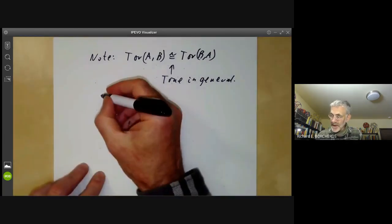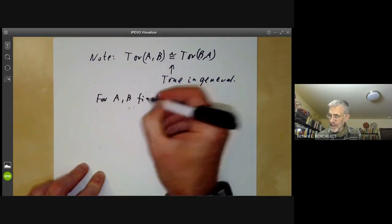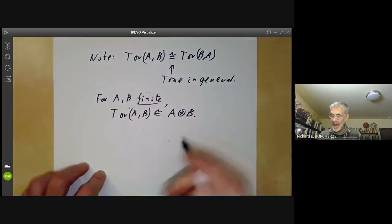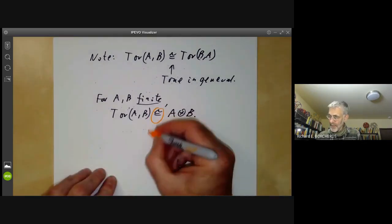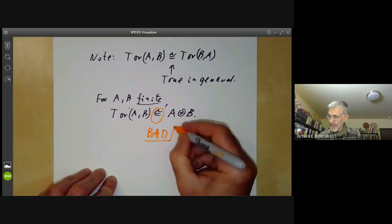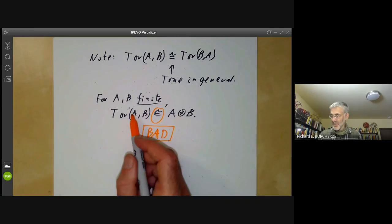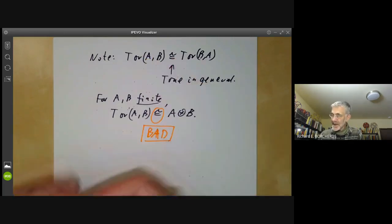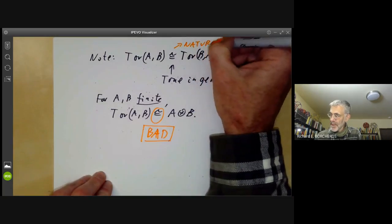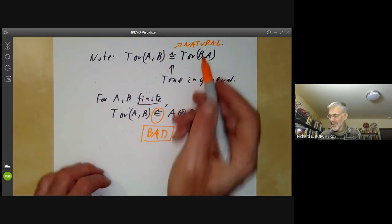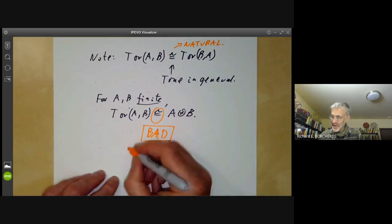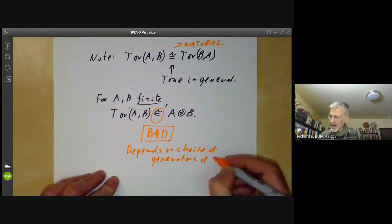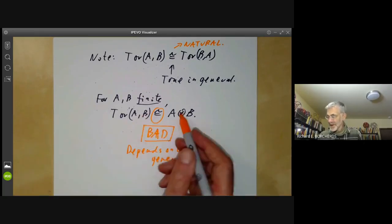Note that this symmetry isn't obvious at all, because although A⊗B ≅ B⊗A, we've defined Tor asymmetrically: we take a free resolution of A and tensor with B, versus a free resolution of B and tensor with A. So it's actually quite remarkable we get the same answer either way. We can also note that for A and B finite, Tor(A,B) happens to be isomorphic to A⊗B. However, this is a rather bad isomorphism — there's no natural isomorphism from Tor(A,B) to A⊗B in general, since any isomorphism depends on the choice of generators of A and B.